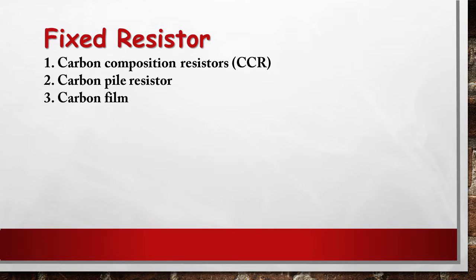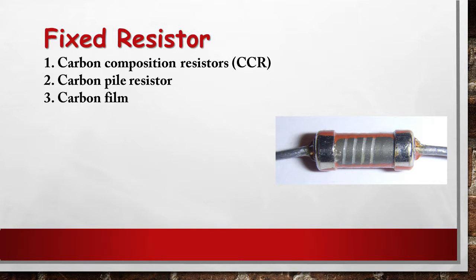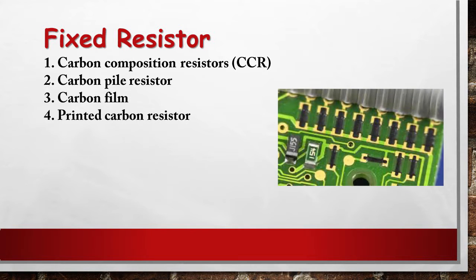A carbon film is deposited on an insulating substrate, and a helix is cut in it to create a long, narrow resistive path. Varying shapes, coupled with the resistivity of amorphous carbon can provide a wide range of resistance values. Carbon composition resistors can be printed directly onto printed circuit board substrates as part of the PCB manufacturing process. Although this technique is more common on hybrid PCB modules, it can also be used on standard fiberglass PCBs. Tolerances are typically quite large.